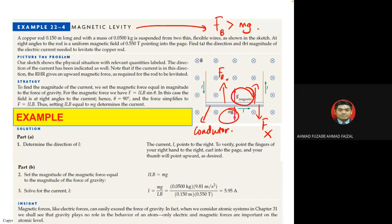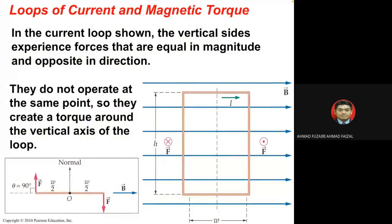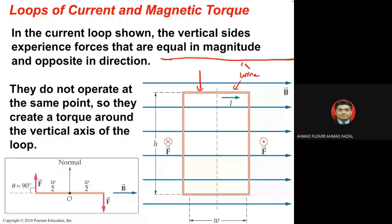From current in a straight wire, we move to current loops and magnetic torque. If we take a wire and bend it into a rectangular loop and place it in a magnetic field, we can analyze what happens. A long straight wire is shaped into a rectangle and placed inside magnetic field B.